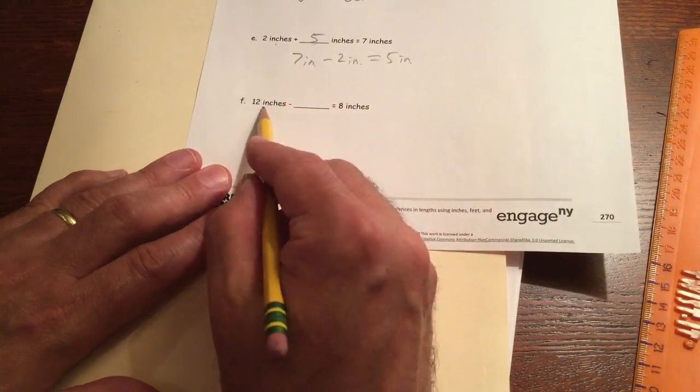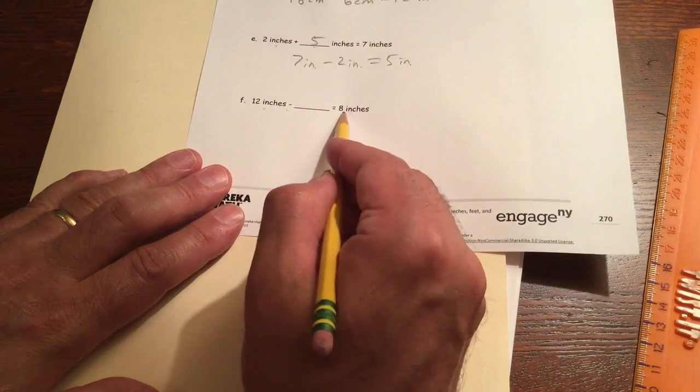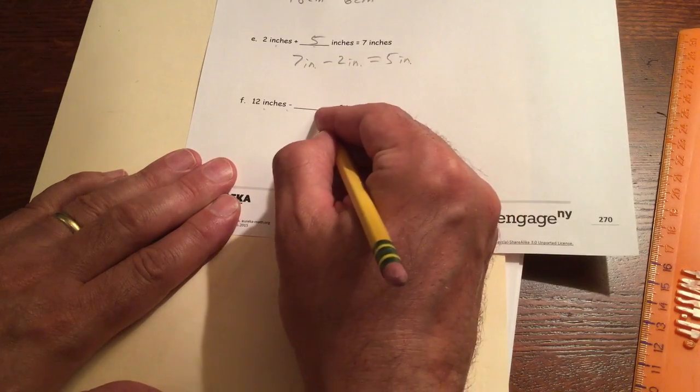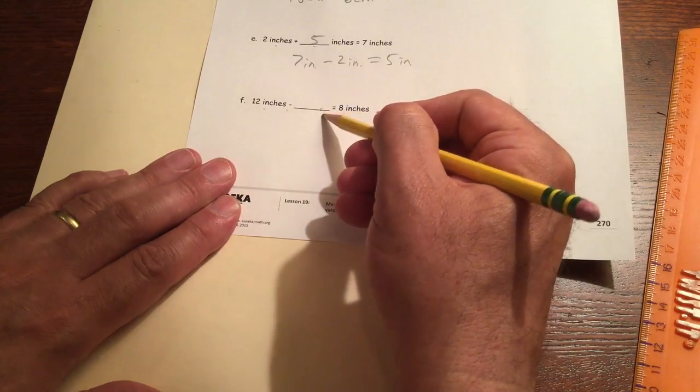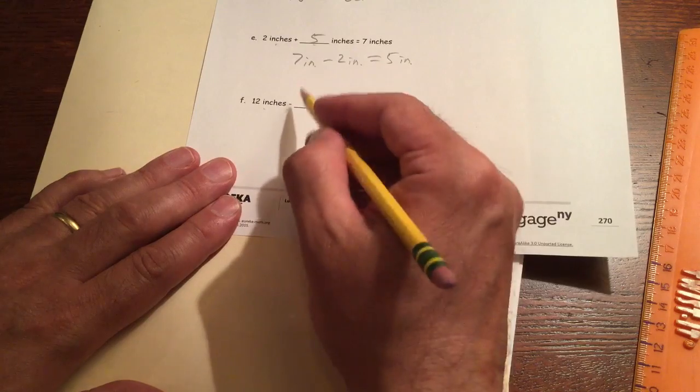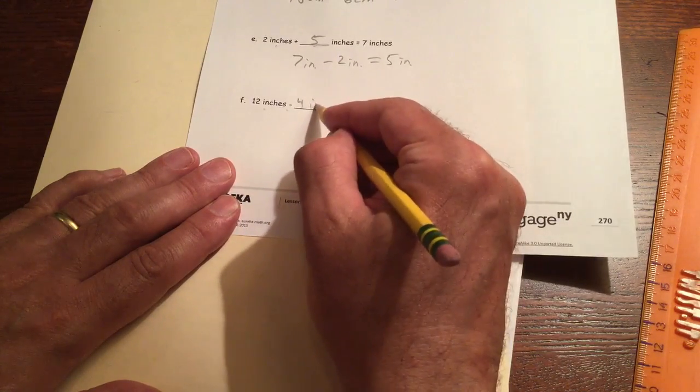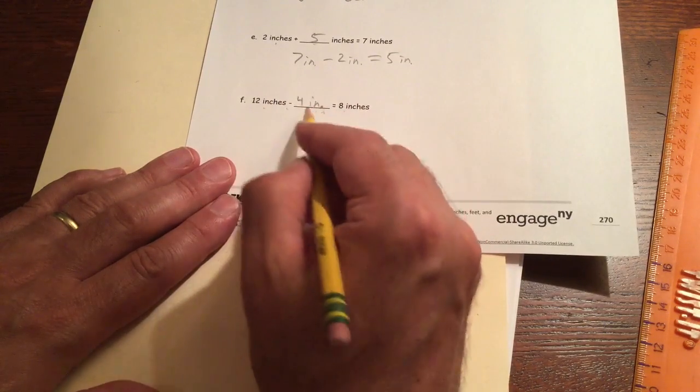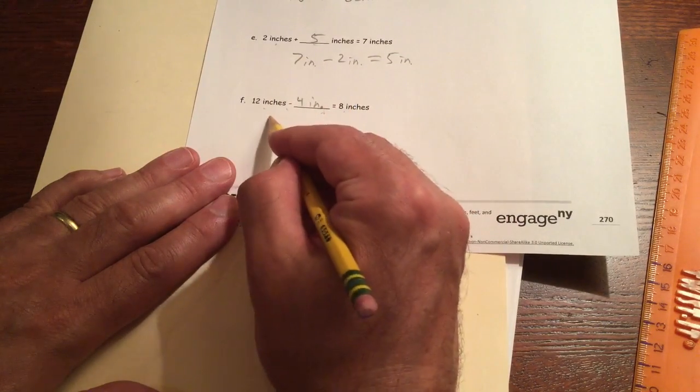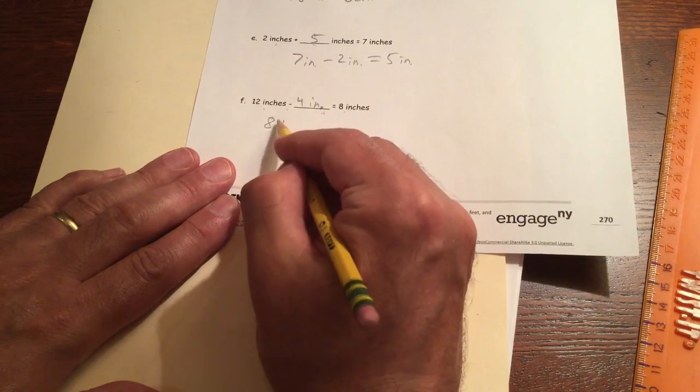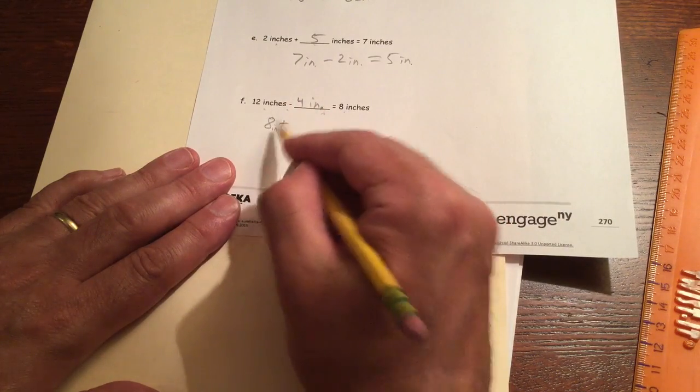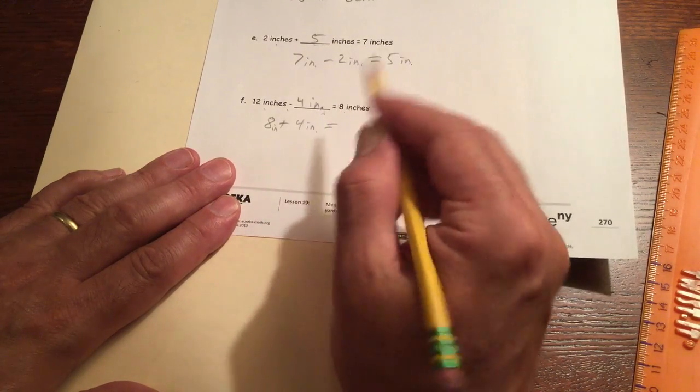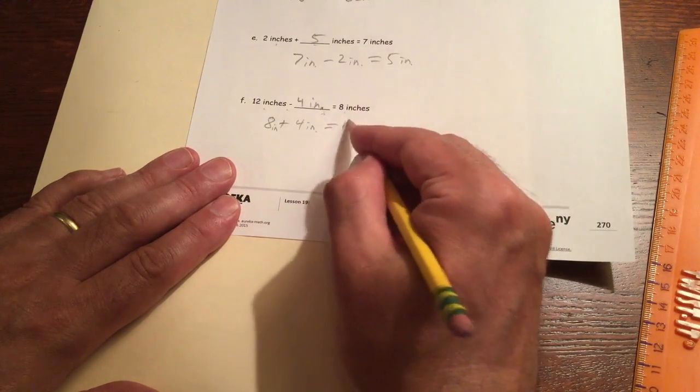And 12 inches minus something equals 8. 12 minus 4 is 8. So this has to be, but there's no units written here. So we don't have to write our units. These are inches, IN. And so this is 12 minus 4 inches equals 8. And then the addition, we should be able to add the 8 and the 4. 8 inches plus 4 inches. 8 plus 4 does equal 12.